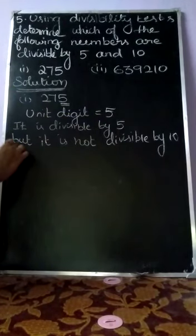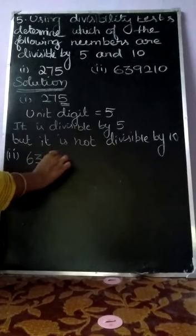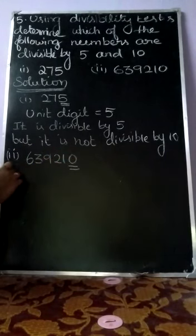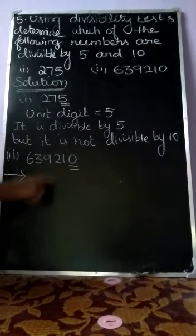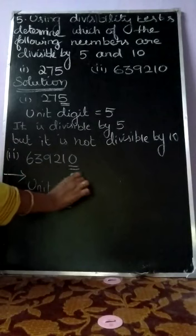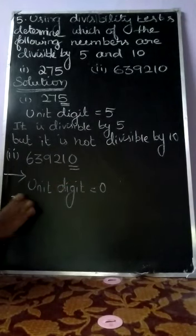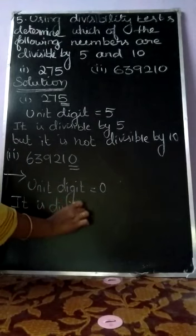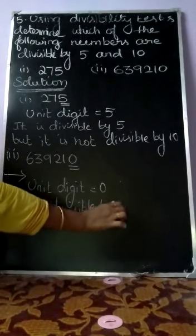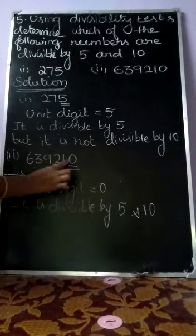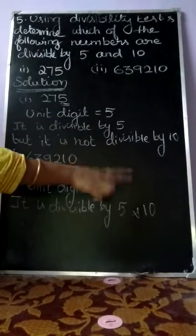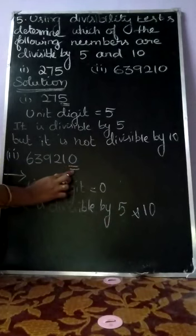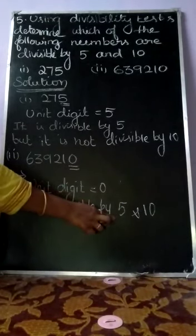Next, second subdivision is 639210. Check the unit digit place value — that is 0. So it is divisible by 5. The ending number is 0, so it also satisfies the condition for 10. For divisibility by 5, the ending number must be 0 or 5. For divisibility by 10, the ending number must be 0 only.